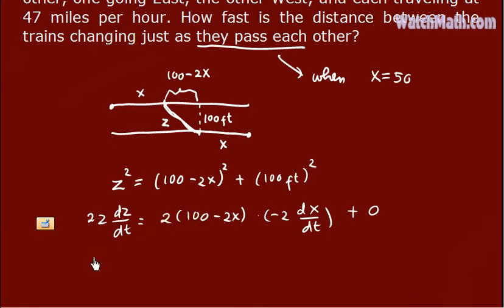When x equals to 50 miles, then we have 2z dz dt. Plug in x equals 50 here. 100 minus 100 is zero. And anything multiplied by zero is zero. So this is equal to zero. Solving for dz over dt, we have dz over dt equals zero.